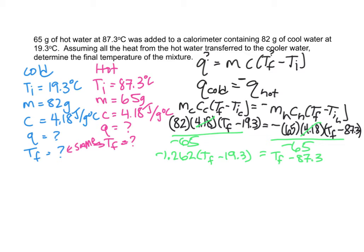The next thing I'm going to do is distribute this to my tf and my 19.3. All right, I did that. Make sure that you've changed your sign here because negative times a negative is going to give you a positive.